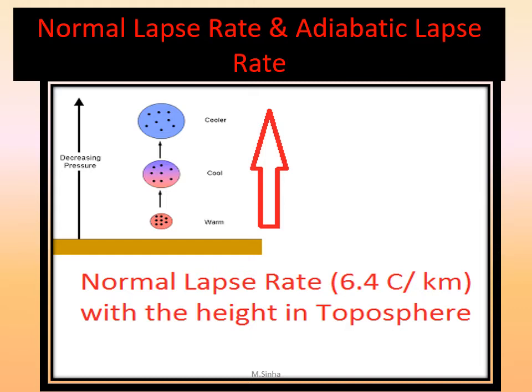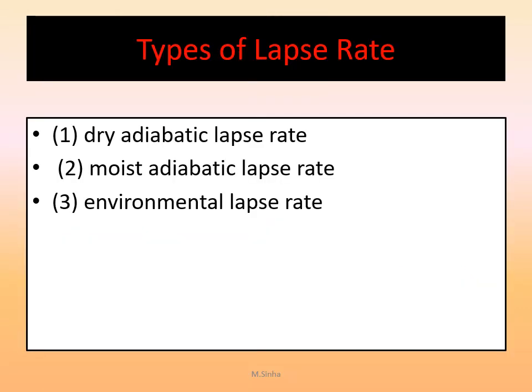The adiabatic lapse rate is associated with the upward and downward movement of an air mass and is related to altitude. There are basically three types of lapse rate: dry adiabatic lapse rate, moist adiabatic lapse rate, and environmental lapse rate. The environmental lapse rate is also known as the normal lapse rate.